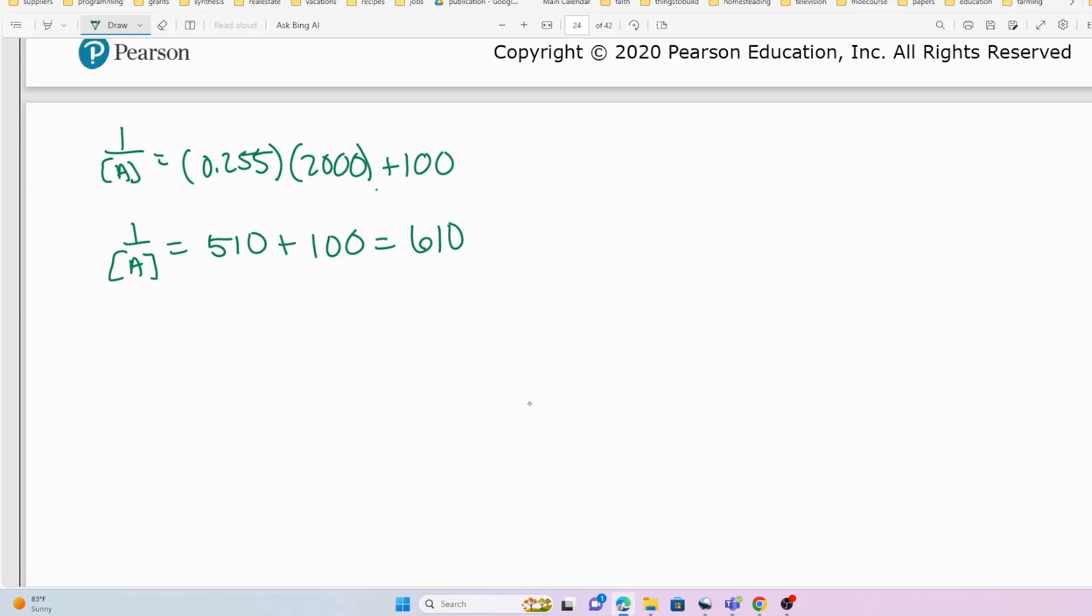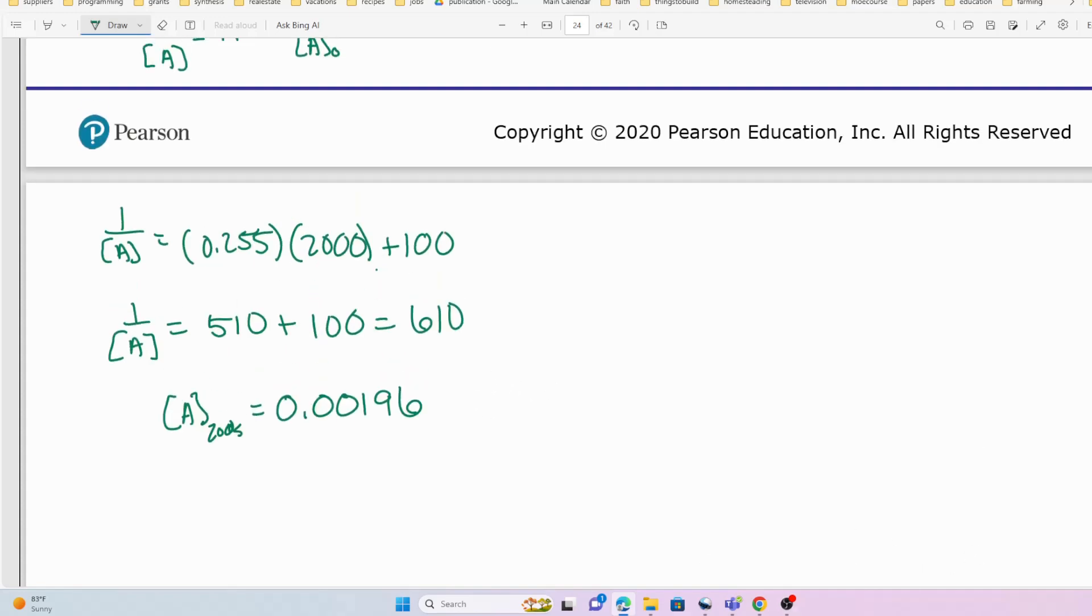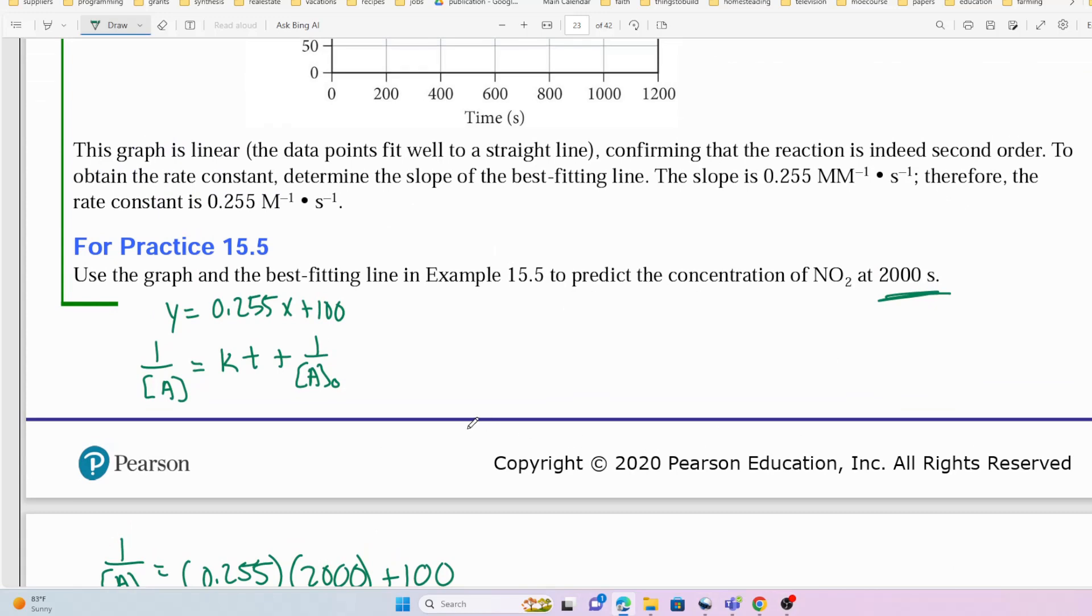So the concentration of A at 2000 seconds is equal to 0.00196 molar. Actually, this is millimolar, so this is 0.00196 millimolar.